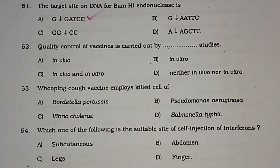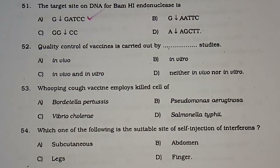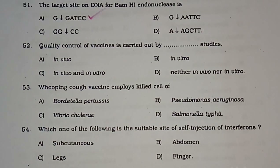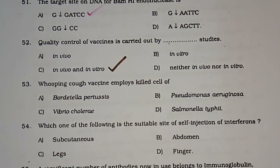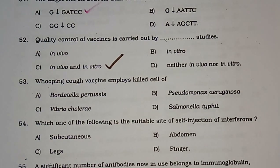Question number 52: Quality control of vaccines is carried out by — (A) in vivo studies, (B) in vitro studies, (C) in vivo and in vitro, (D) neither in vivo nor in vitro. The correct answer is option C — in vivo and in vitro.